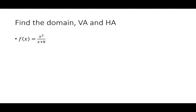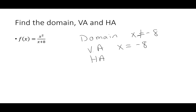Now let's put domain, vertical, and horizontal asymptotes together. For x²/(x+8): the domain says x cannot be -8, which gives the vertical asymptote x=-8. For the horizontal asymptote, power 2 on top is bigger than power 1 on bottom, so there is none.